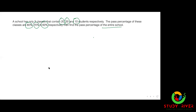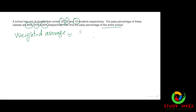آپ کو اس سوال کا جواب نہیں پتا؟ میں بتا دیتا ہوں۔ اس کو بولتے ہیں 'weighted average'۔ Weighted average find کرنے کا طریقہ کیا ہوتا ہے؟ اس کا formula سب سے پہلے سن لیں۔ جو آپ کو average دی ہوئی ہیں، یہ percentage بھی یہاں پہ average ہے، یہ ہے A1۔ (You don't know the answer to this question? Let me tell you. This is called 'weighted average'. What is the method to find weighted average? First listen to its formula. The averages given to you, these percentages are also averages here, this is A1.)